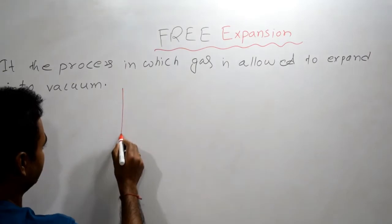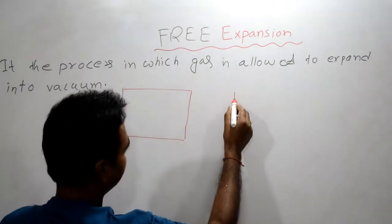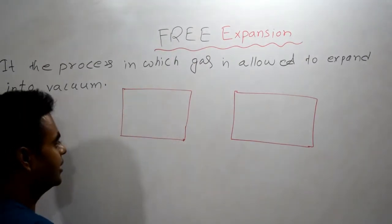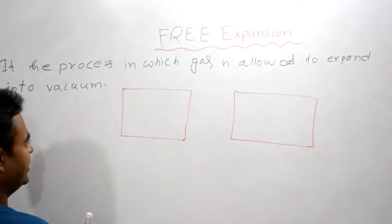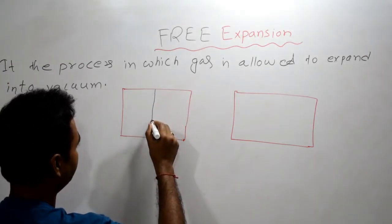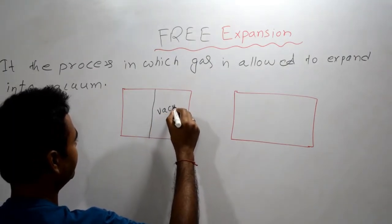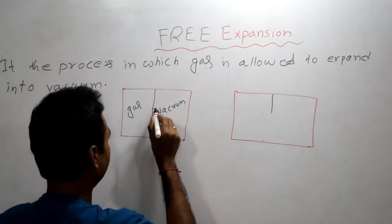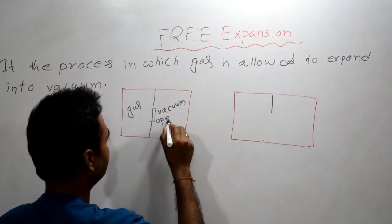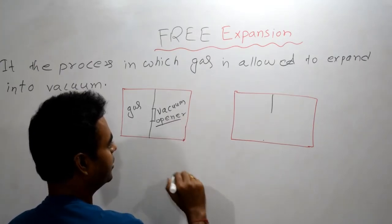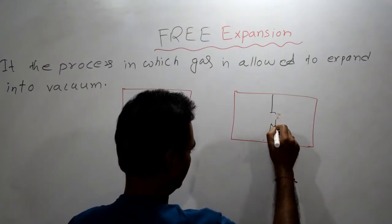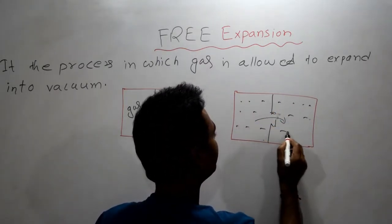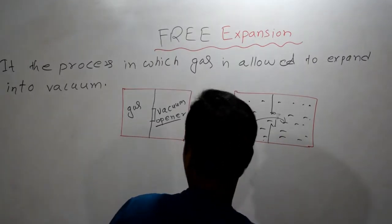Let's understand this with an example. We have a container that is well insulated, meaning there is no heat transfer and no mass transfer. This container is separated into two parts: one part is vacuum and the other part contains gas. Now, there is an opener here, and after opening it, the gas will enter into the vacuum part and fill the whole container.